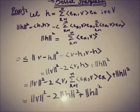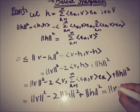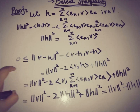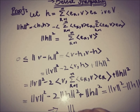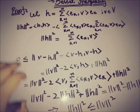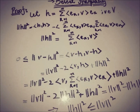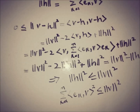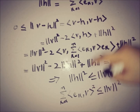After substitution this simplifies to ||v||² minus 2||h||² plus ||h||², which gives ||v||² minus ||h||². Since this whole expression is greater than or equal to zero, we can rearrange to get ||h||² ≤ ||v||². Substituting the value of ||h||² — which equals the sum from k = 1 to n of |⟨e_k, v⟩|² — we obtain the inequality for finite n.